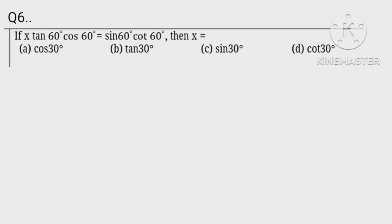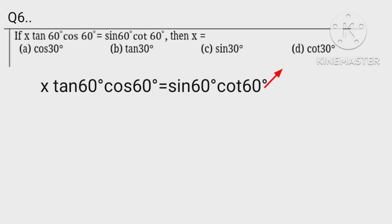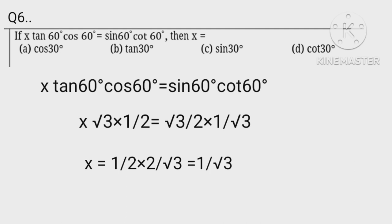Here putting values for sin, cos, tan, and cot 60 degrees, we get x times square root 3 times 1 upon 2 equals square root 3 upon 2 times 1 upon square root 3. Therefore x equals 1 upon 2 times 2 upon square root 3 equals 1 upon square root 3.